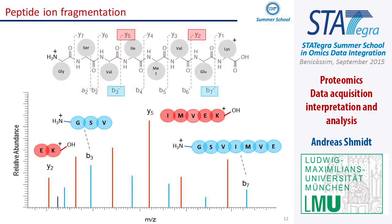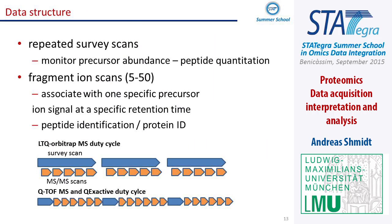This fragmentation is not stochastic but happens very specifically. If you apply energy, this happens at the peptide bond — this is called collisional induced dissociation. We can fragment between every pair of amino acids, giving us specific signals. We then connect each mass with a specific fragment of the peptide. This is the data structure — repeated survey scans and the MS/MS scans used to identify the peptide and later the protein.